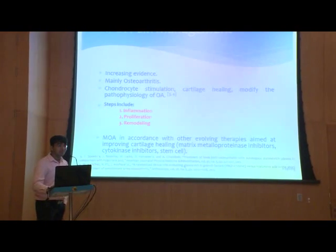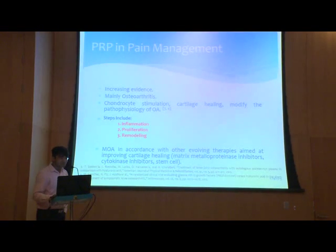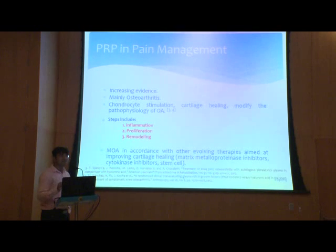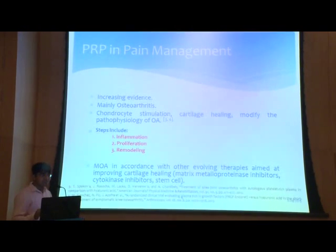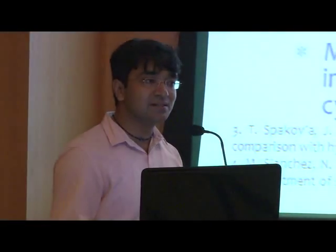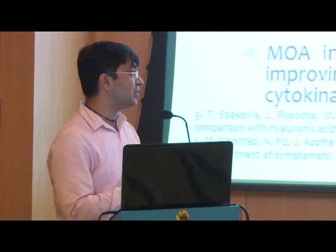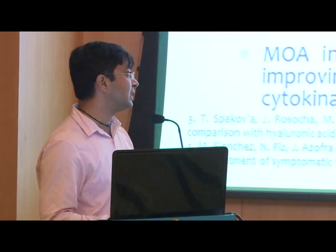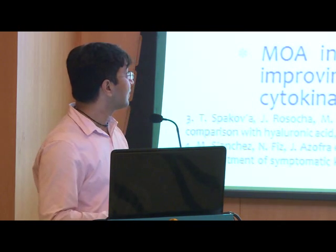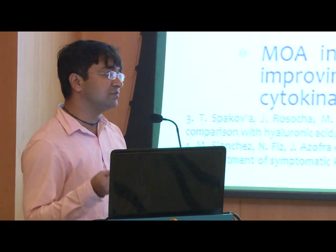There is increasing evidence but it still lacks robustness for the role of platelet-rich plasma in pain management. It is not yet considered a first-line management for any pain condition. The evolving evidence is mainly for osteoarthritis, as PRP leads to chondrocyte stimulation, healing of cartilage, and modification of pathophysiology — being a degenerative disease, it enables regeneration of osteoarthritic tissue. The mechanism aligns with other evolving therapies such as matrix metalloproteinase inhibitors, cytokine inhibitors, and stem cells. The regeneration steps include inflammation, followed by proliferation, and then remodeling of laid-down collagen.